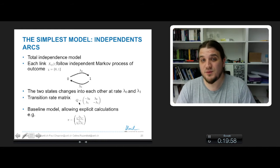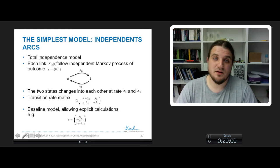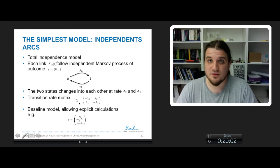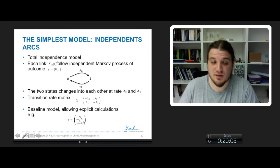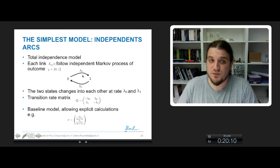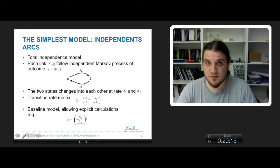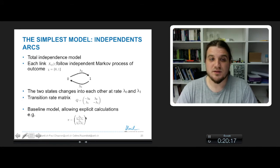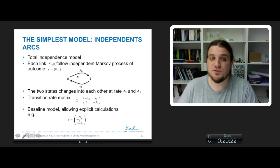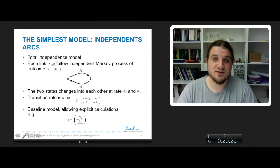In this very simple case, a lot of complicated calculation allows us to find the stationary distribution. Depending on the values of lambda 0 and lambda 1, you can predict the density of the network according to the values of lambda 0 and lambda 1. You can also know in what state will be the network after an infinite amount of time.